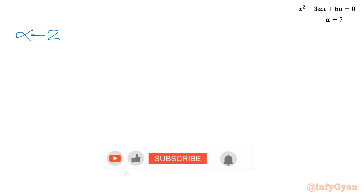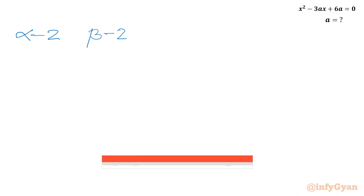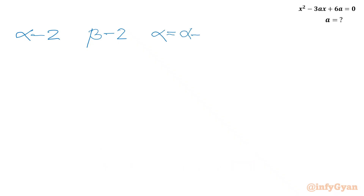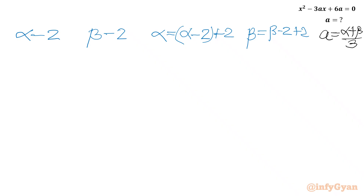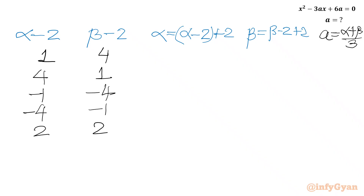Let me draw a chart with columns for (alpha - 2), (beta - 2), alpha, and beta, and then A = (alpha + beta)/3. The factor pairs for (alpha - 2) and (beta - 2) are: 1 & 4, 4 & 1, -1 & -4, -4 & -1, 2 & 2, -2 & -2.